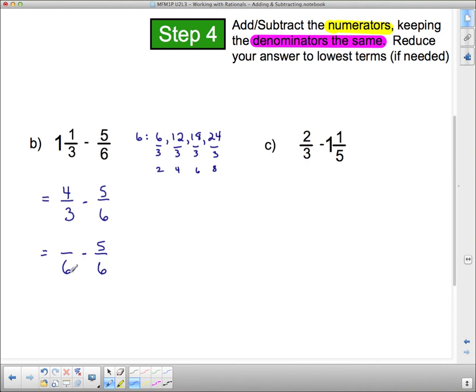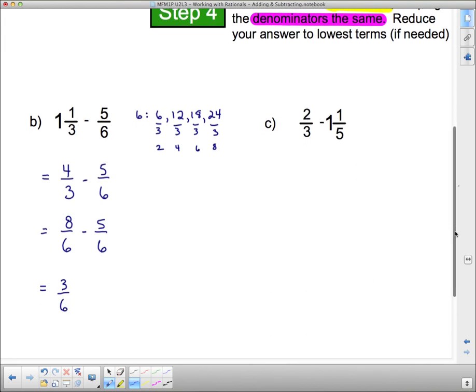I can leave that as 5 sixths and just change this 3 into a 6. How do I change 3 into a 6? I multiply it by 2. 3 times 2 is 6, so 4 times 2 is 8. And now I just use my rules for integers. 8 subtract 5 is 3. So I've got 3 sixths. And 3 sixths, well, 3 is half of 6. So 3 sixths is something that you should recognize as being 1 half. So we reduce to lowest terms.